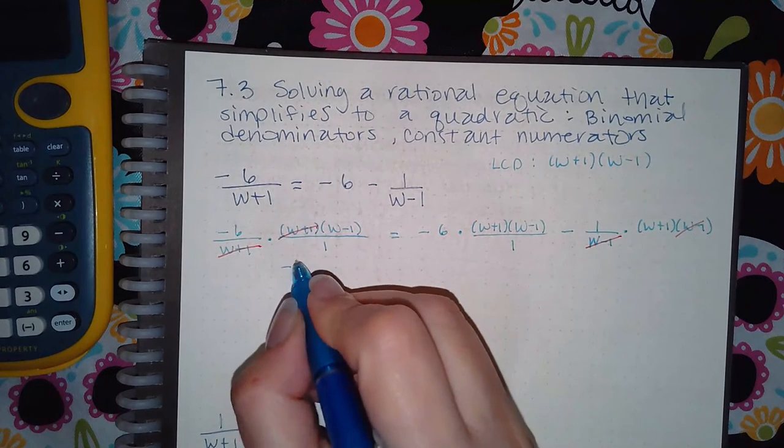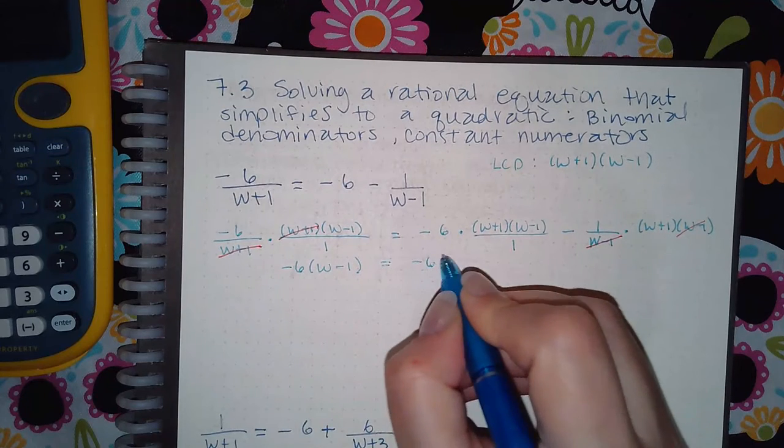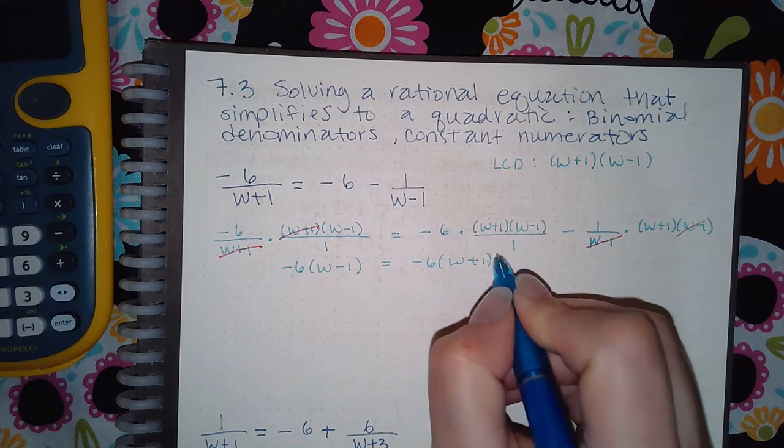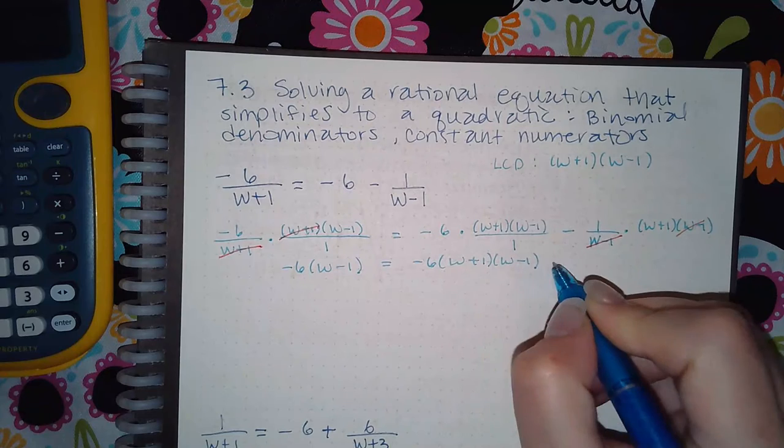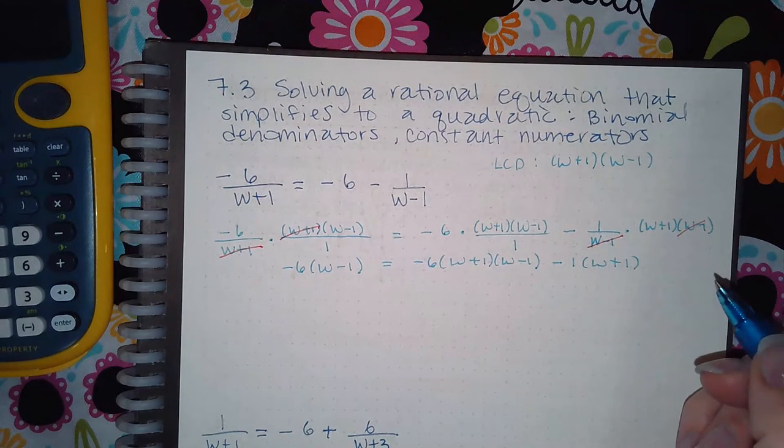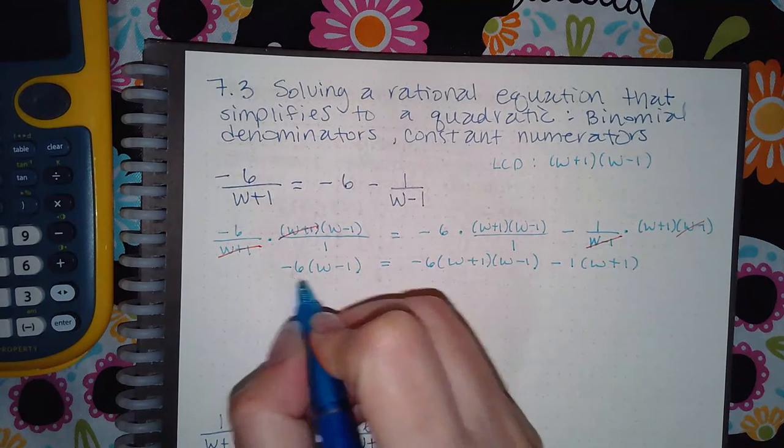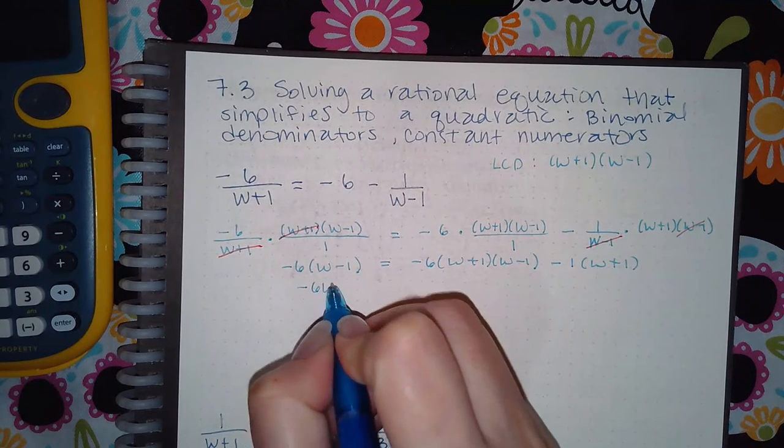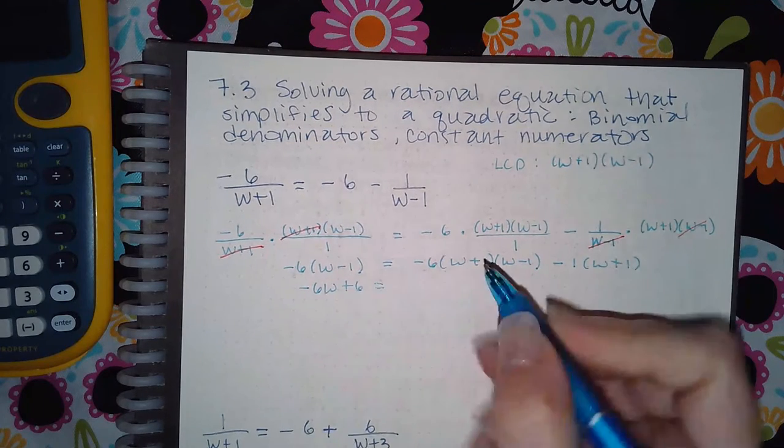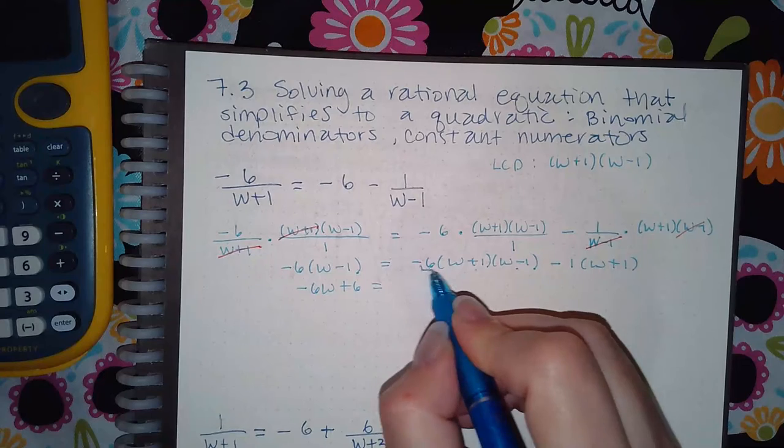What we're left with is negative 6 times w minus 1, negative 6 times w plus 1 and w minus 1, and then negative 1 times w plus 1. And so I'm going to go ahead and distribute my coefficients. So I have negative 6w positive 6. Over here, be careful when you have three things multiplied—you have to multiply two of them.